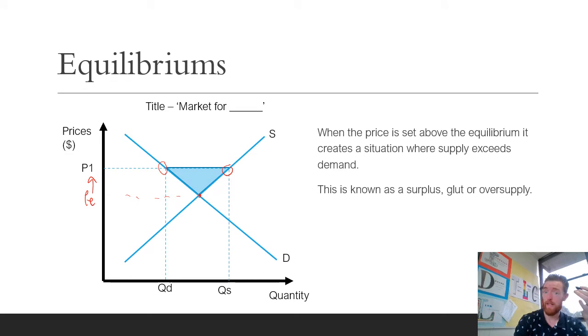Eventually what would happen is suppliers are going to start discounting prices until we get to an equilibrium point and they can clear off excess stock. But when the price is set above the equilibrium it creates an oversupply because the price is too high so the quantity supplied exceeds the quantity demanded.